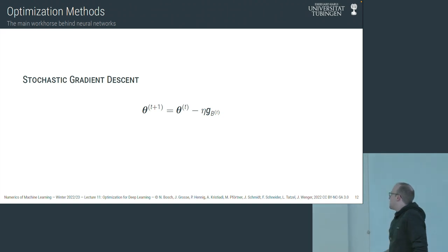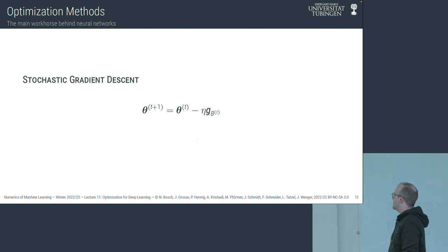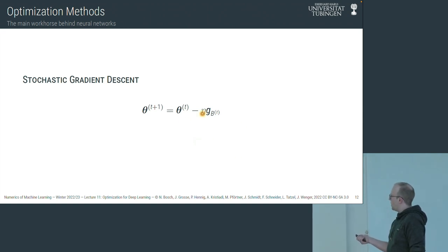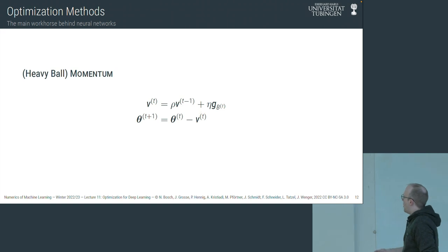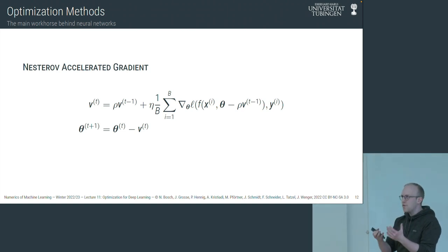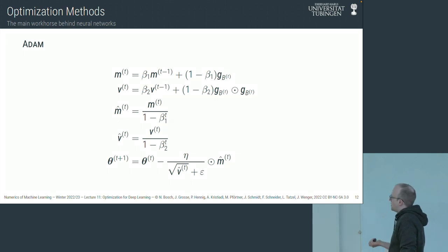As a result of using mini-batches and wanting methods that train rather than just optimize, people have come up with many different methods. Stochastic gradient descent has a simple update: start with some theta, take a small step in the direction of the negative gradient, with a learning rate eta evaluated on the mini-batch. There are also momentum variants like Heavy Ball or Nesterov accelerated gradient, which incorporate previous gradients, as well as RMSProp, Adam, and many more variations.